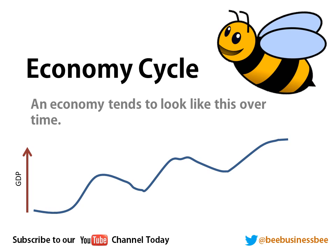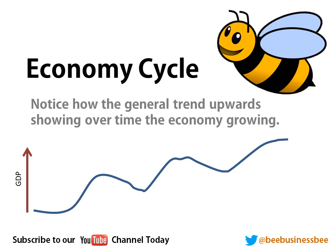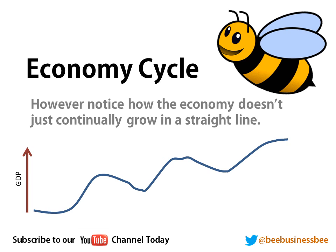The economy tends to follow a cycle, as shown on this graph. The economy grows, then starts to slow down before getting a bit smaller, then grows again in the same repeating cycle. Notice that the general trend is actually upwards — if you were to draw a trend line, the economy over time is continually growing, but it doesn't grow in a straight line. There are periods of growth and also periods when it starts to shrink.